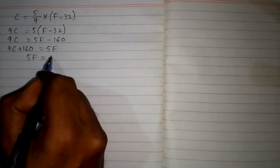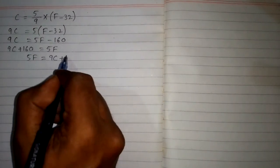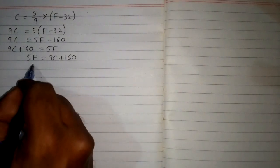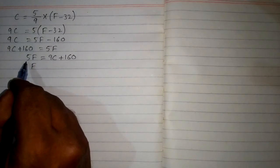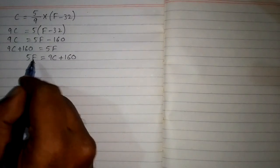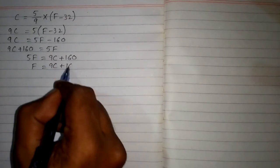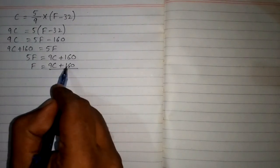Now we will take this 5 to this side. Since this 5 is multiplying on this side, it will be divided on the other side. So we will divide 9C + 160 by 5.